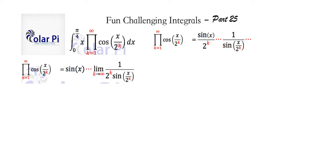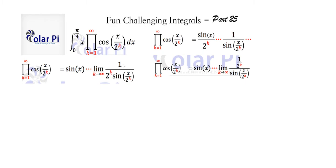Instead of saying we can cross out forever, we look at what happens as k goes to infinity of this expression — that way we don't have to write dot dot dot, because writing the limit here is the same as recognizing that what came before is canceled, and what comes after will keep canceling. We only need to look at what happens to this as k goes to infinity. Let's write this expression in a way that's friendly to take the limit of: dividing by 2 to the k is the same as multiplying by 1 over 2 to the k.